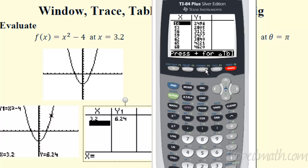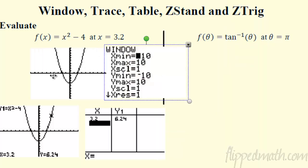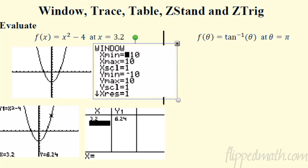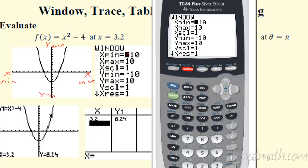The window is one of the trickiest parts of the calculator. The x-axis labels: x max is the biggest x on the right, x min is the smallest on the left. In standard, that's −10 to 10. X scale (Xscl) is what you count by — default is 1. Same idea for y max and y min. This may be basic for some of you, but that's what the window means.